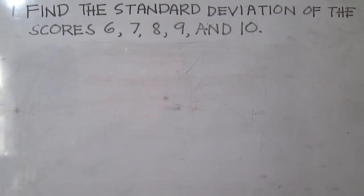Find the standard deviation of the scores 6, 7, 8, 9, and 10. To compute the standard deviation, we need the mean and the variance. The mean is just the average of the scores, while the variance is the average of the squares of the deviation from the mean. Let's get started. Let's represent the scores with the variable X.